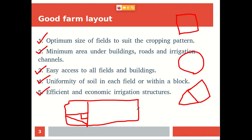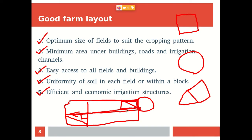The irrigation structure should be efficient and economic. When planning permanent structures, we have to use pumps and pipes. If the irrigation structure is far from the field, we need efficient technology like PVC pipes or steel pipes. Alternatively, we should keep the farm nearer to the irrigation structure to reduce the cost of transporting irrigation water. We can establish all our farms nearby. These are the characteristics of a good farm layout.